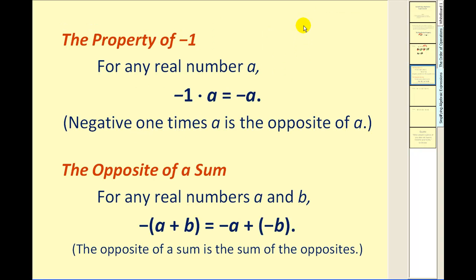Okay, a couple other details here. The property of negative 1. For any real number A, negative 1 times A is equal to negative A. Or you could say negative 1 times A is equal to the opposite of A. Now this idea may sound pretty obvious, but it's very important when we talk about the opposite of a sum. This is where many errors can occur.